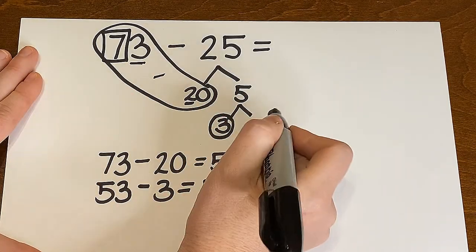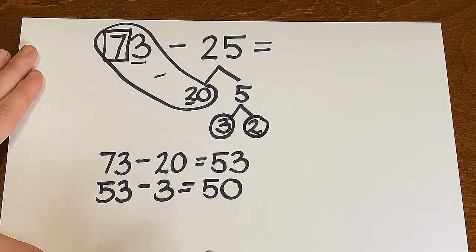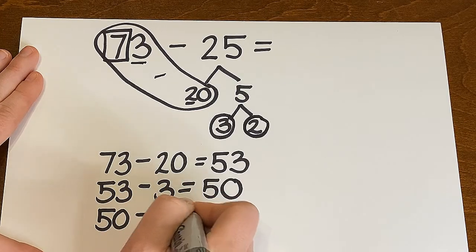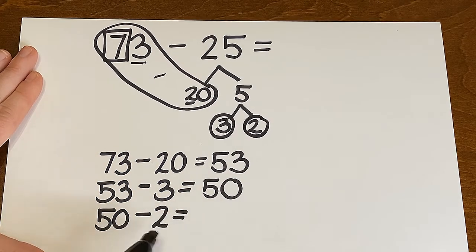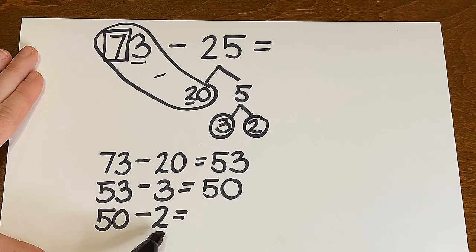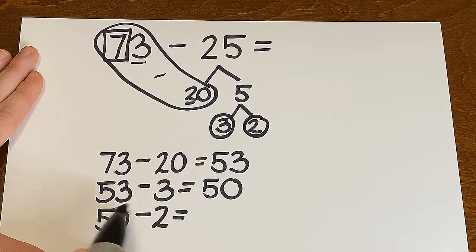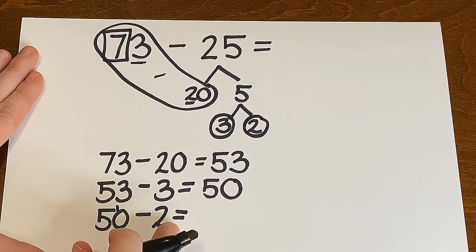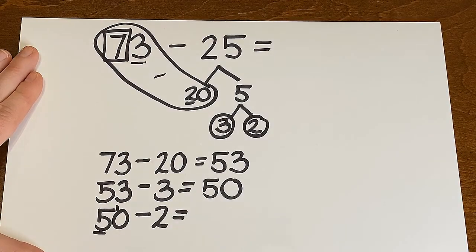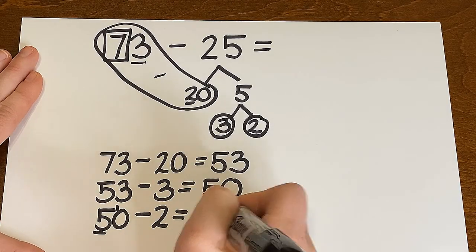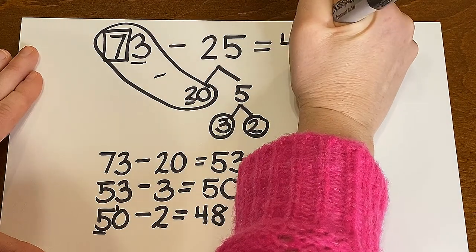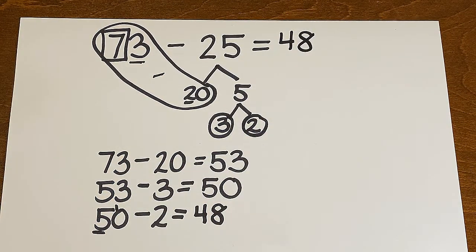All right. Almost done but not quite because I broke that 5 down into another number and that is 2. So now I'm at 50 take away 2. Thinking backwards, counting backwards. Which two numbers come before 50? So I'm thinking backwards. 9, 8. Because remember that 0 actually means 10. 10 take away 2 is 8. And if I'm going backwards by 1 place in the tens place, that is going to be a 4. So I'm at 48. So 73 take away 25 is 48. Aha. Fantastic.